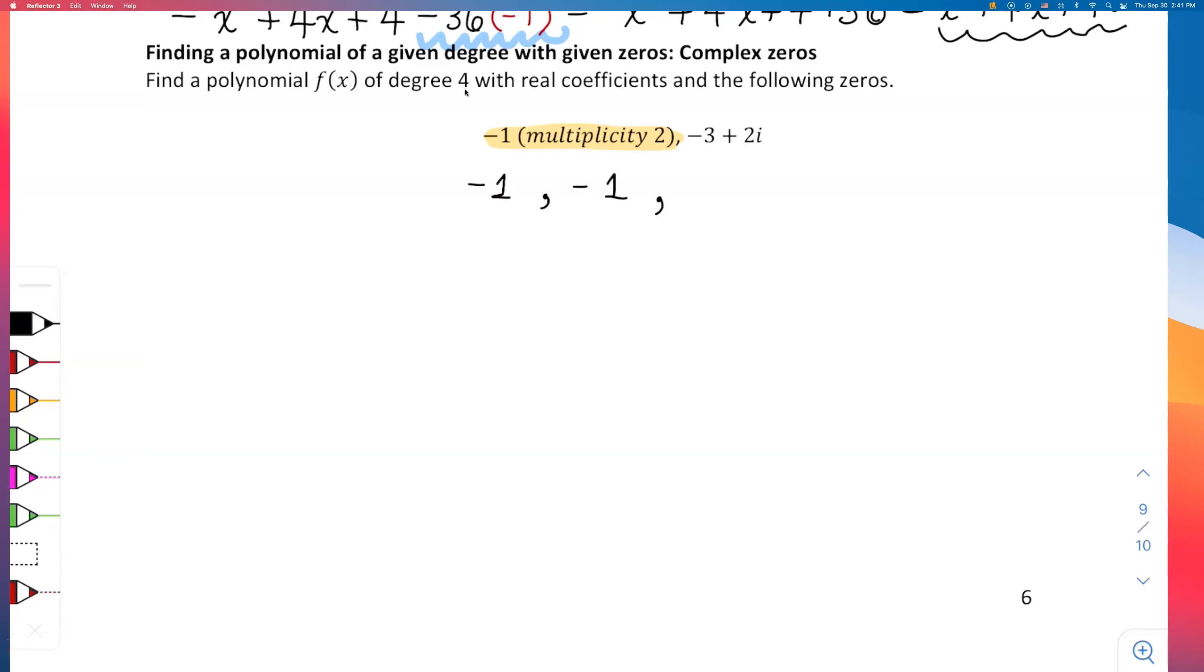What are the other zeros? -3 + 2i, but remember from the conjugate zeros theorem, if -3 + 2i is a zero, then its conjugate pair -3 - 2i is also a zero. Look, we have 1, 2, 3, 4 zeros with degree 4. That's all we need, so let's use these to find a polynomial.